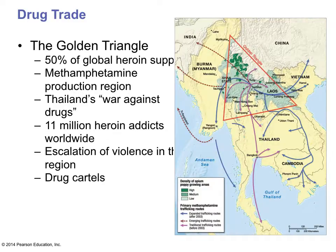Another problem in this realm is the drug trade, something very similar to what we saw in Afghanistan. There is significant heroin and methamphetamine production. Thailand is trying to control it. With 11 million heroin addicts worldwide, drug cartels are heavily involved, making this a major problem in this part of the world.